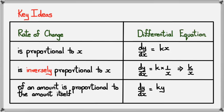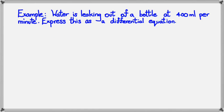So, these are the three key ideas for differential equations. Alright? From this point, what we'll do is we'll look at a couple of examples, and then we'll be done with the session anyway. Alright, so let's have a look at a couple of examples. So, the first one here is, water is leaking out of a bottle at 400 mils per minute. Express this as a differential equation. Alright?